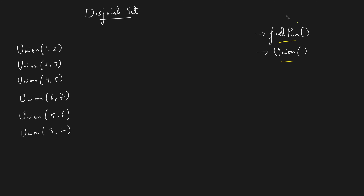Assume the number of nodes is seven and all of them belong to a single component each — so node 1 is its own component, node 2 its own, and so on up to node 7. Everyone is its own parent. For the find parent operation, if someone asks for the parent of three, you return three. That's the task of find parent — it gives you the parent of a component.